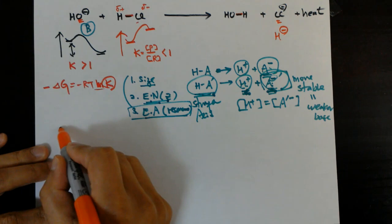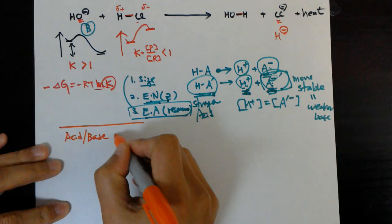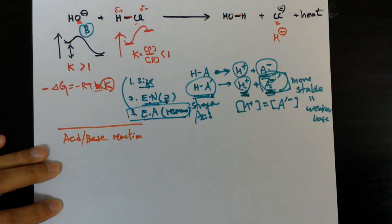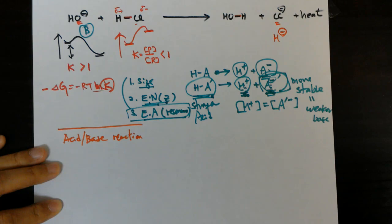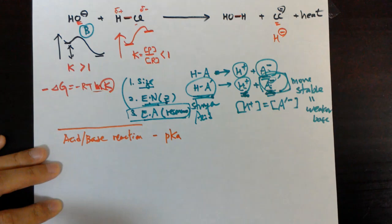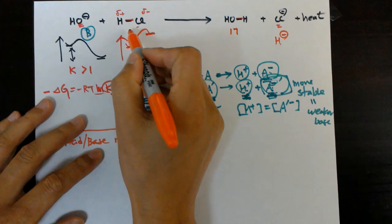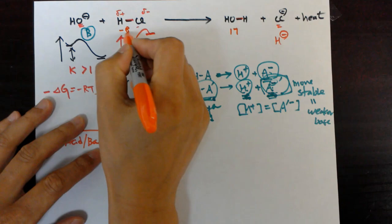Acid-base reactions are essential elements in understanding organic reactions — that's why I'm showing these inorganic acid-base reactions. You also know that acid-base reactions are predicted using the value called pKa, which is the negative log of the equilibrium constant of the acid. For example, roughly speaking, water has a pKa of 17, and HCl has a pKa of negative 8.